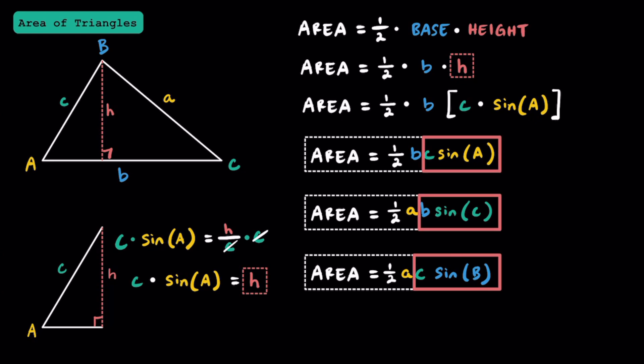By using your knowledge of the general trig functions — SOHCAHTOA, or in this case sine — you can represent the height. Hopefully now you know how to find the area of a non-right triangle. By using a little bit of trig and substitution, I think you're now good to go.